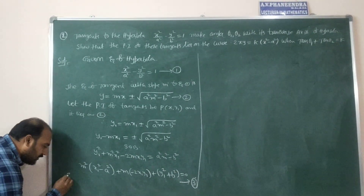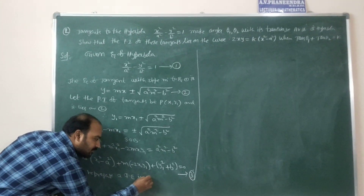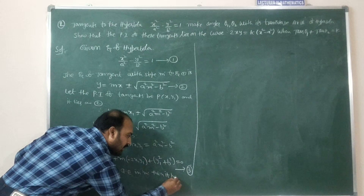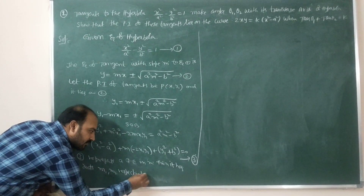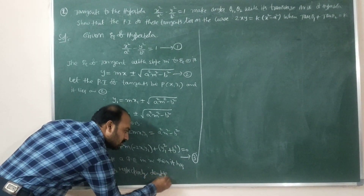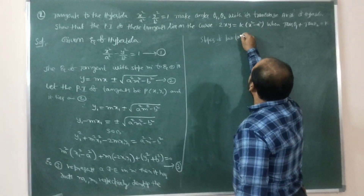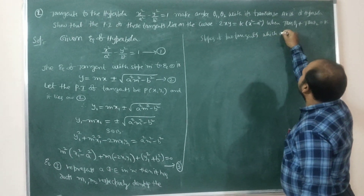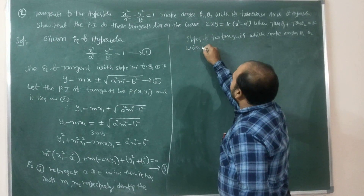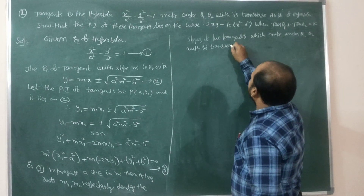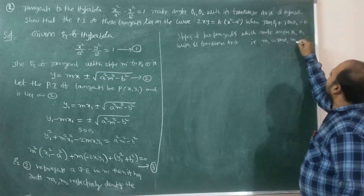Equation 3 represents a quadratic equation in m, so it has two roots m₁ and m₂ respectively. These denote the slopes of the two tangents which make angles θ₁ and θ₂ with the transverse axis. That is, m₁ = tan θ₁ and m₂ = tan θ₂.